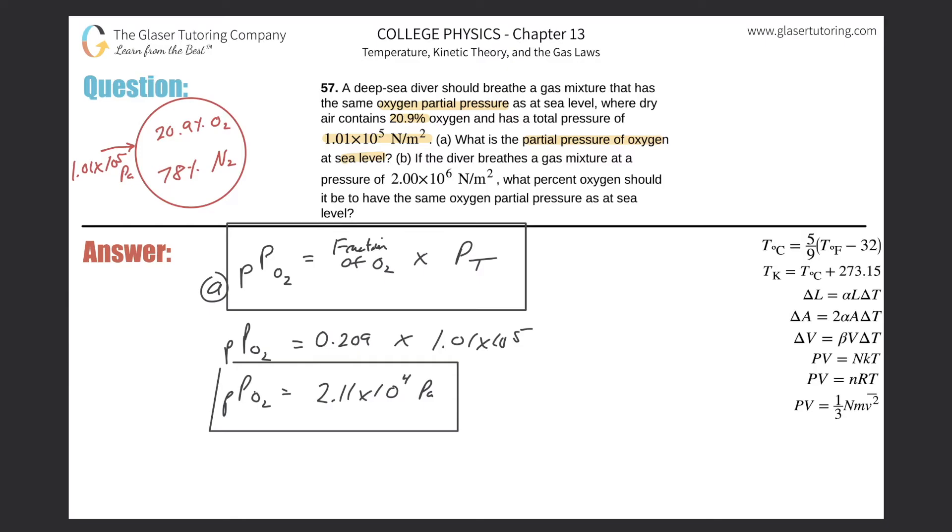How about letter B? If the diver breathes a gas mixture at a pressure now of 2 times 10 to the sixth newtons per meter squared, basically they're telling you the total pressure of the gas mixture.